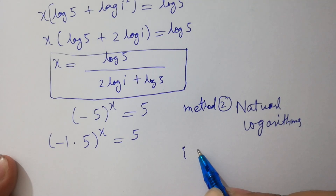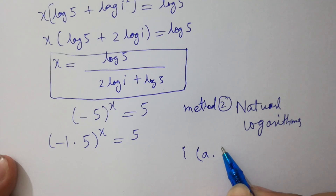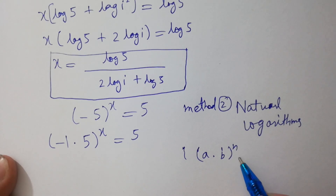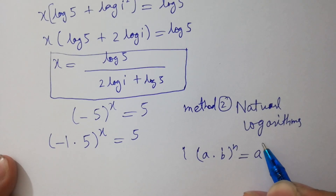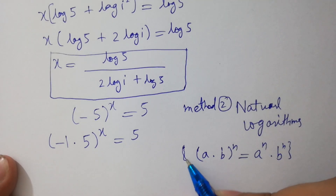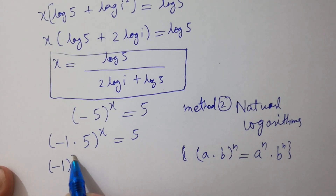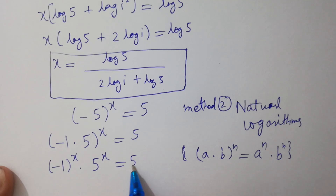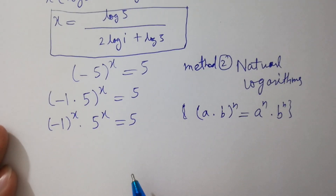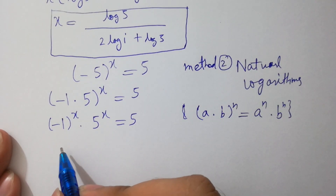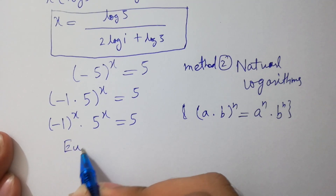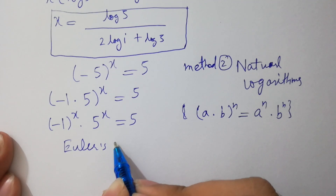Since a times b to the whole power n equals a to the power n times b to the power n, it will be equal to minus 1 to the power x times 5 to the power x equals 5. I hope you understood. As we know Euler's identity,